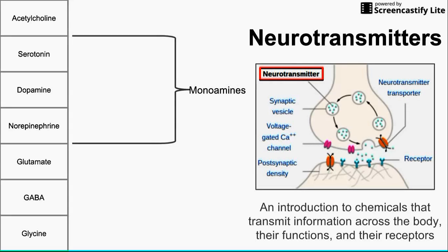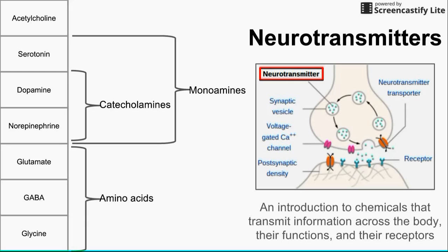First we have the monoamines, made up of serotonin, dopamine, and norepinephrine. Dopamine and norepinephrine can further be broken down into the catecholamines — so dopamine and norepinephrine are both catecholamines and monoamines. Glutamate, GABA, and glycine are all amino acids, and acetylcholine stands in a class on its own. Knowing these categories is helpful and may help you remember their structure and how these neurotransmitters are synthesized.